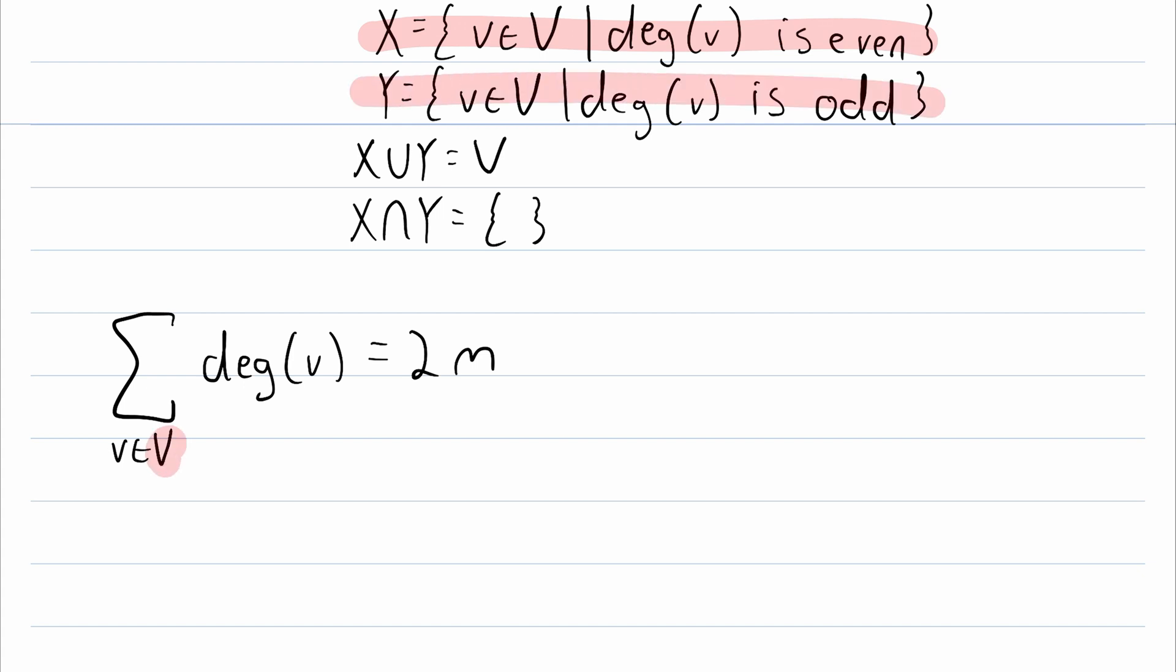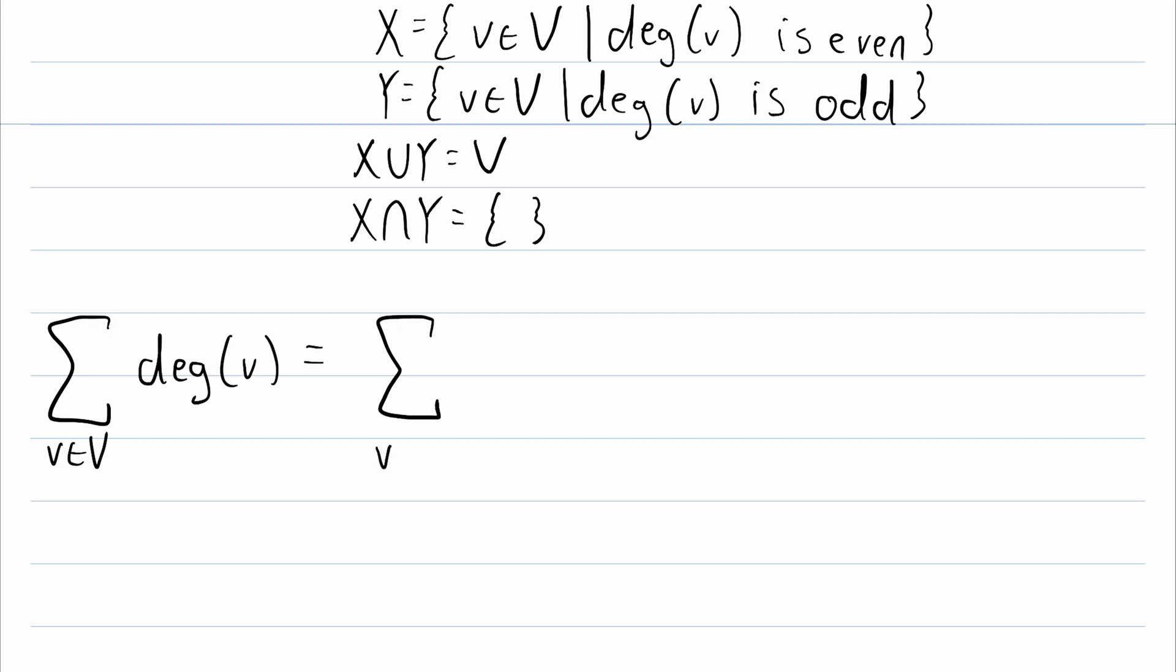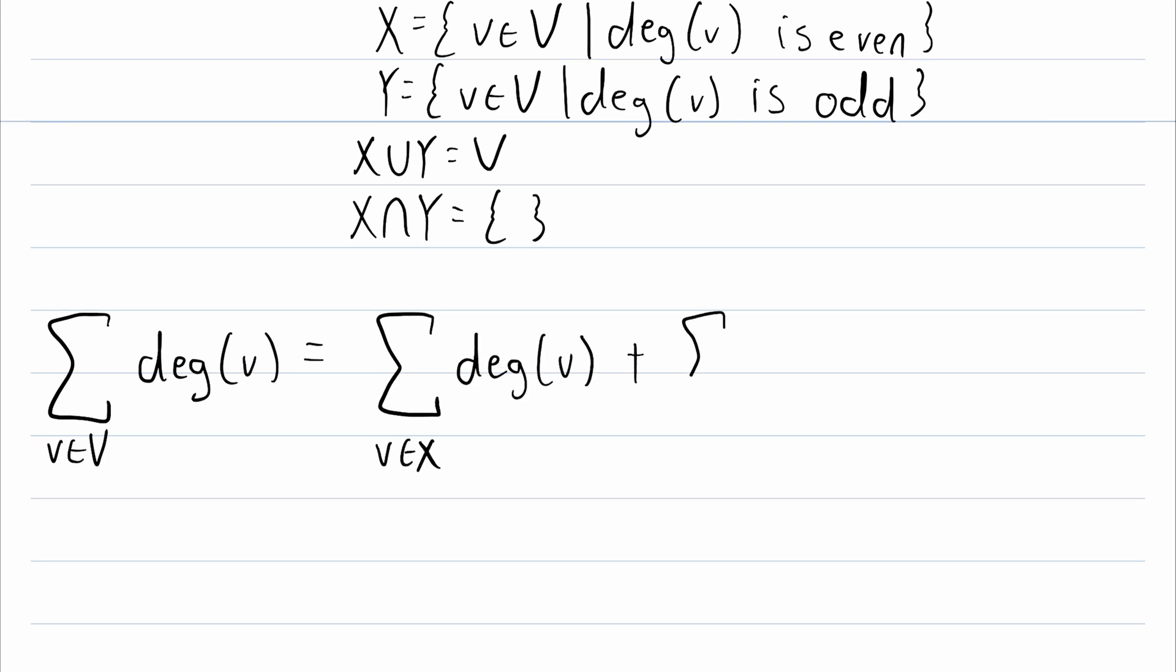Since we partition the vertex set V into two sets X and Y, we can rewrite this sum, splitting it up into the sum of even degrees and odd degrees. So, instead of just writing it as the sum of all the degrees, we can write it as the sum of all of the even degrees plus the sum of all of the odd degrees. So, we're adding up the same numbers, we're just splitting up the sum to the sum of even numbers and odd numbers. And again, we know that this is equal to 2 times M.